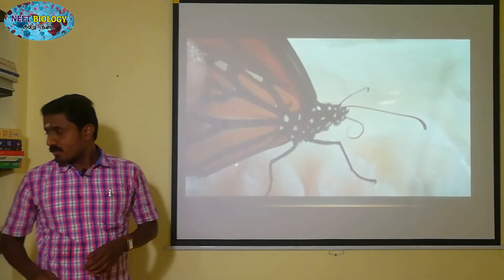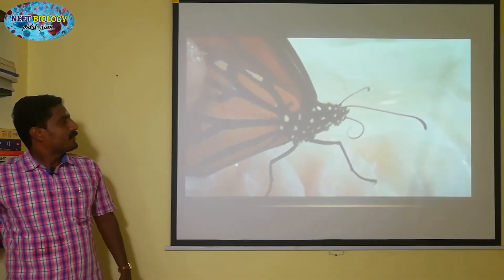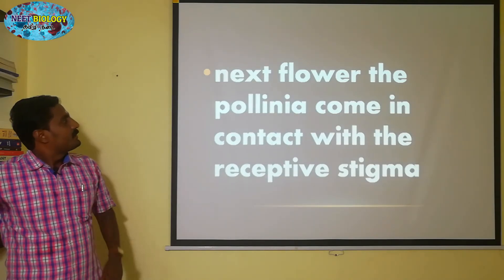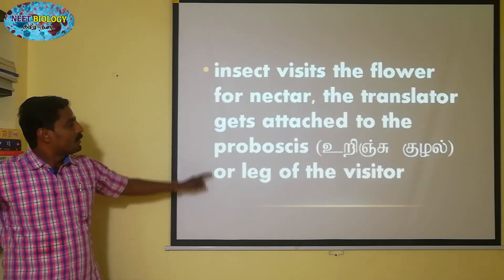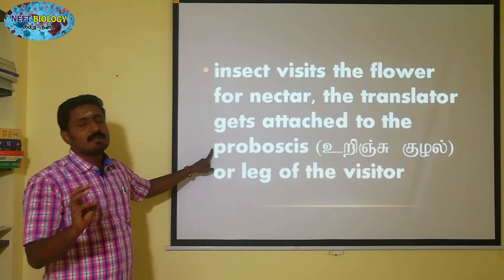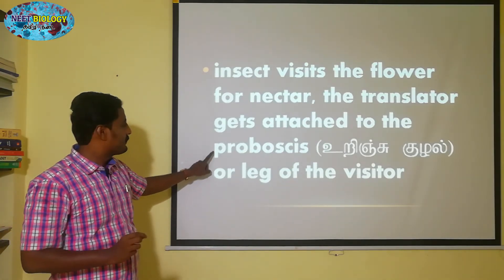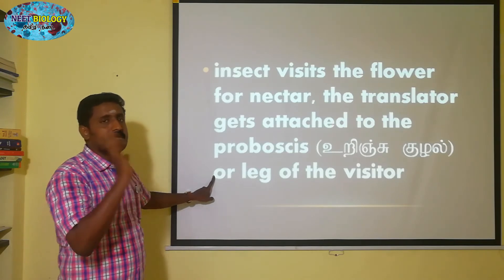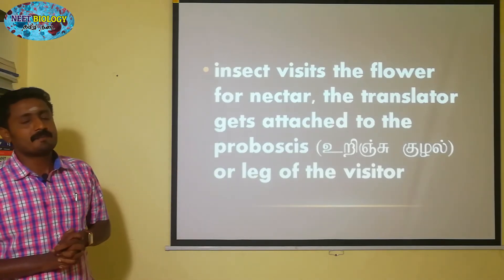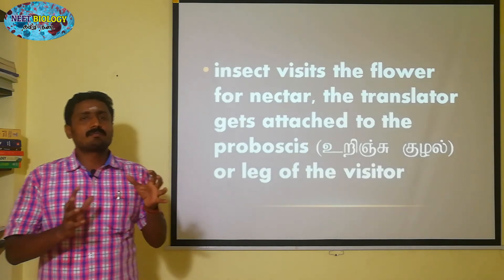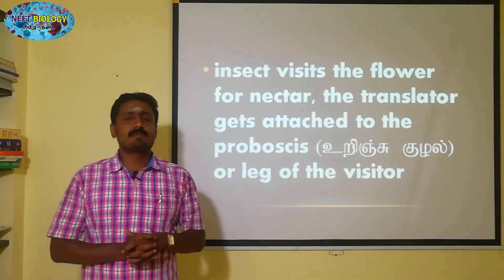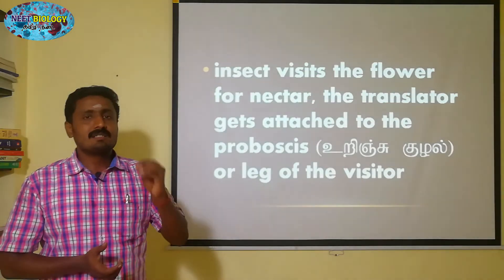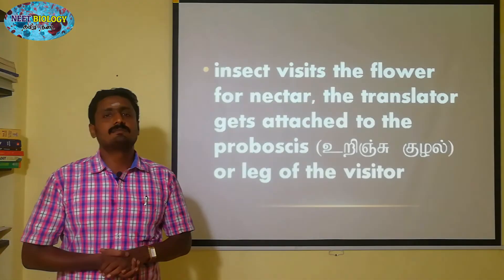The proboscis is helpful for the sucking purpose, absorbing substances from the host. The corpusculum, or the translator structure, which is present at the anther, will be sticking onto the proboscis or the leg of the insect visitor.